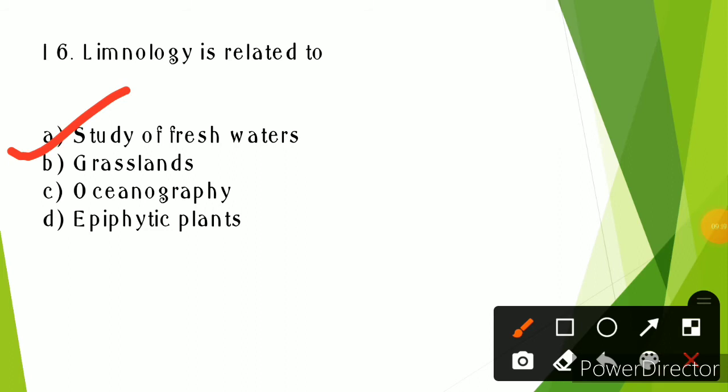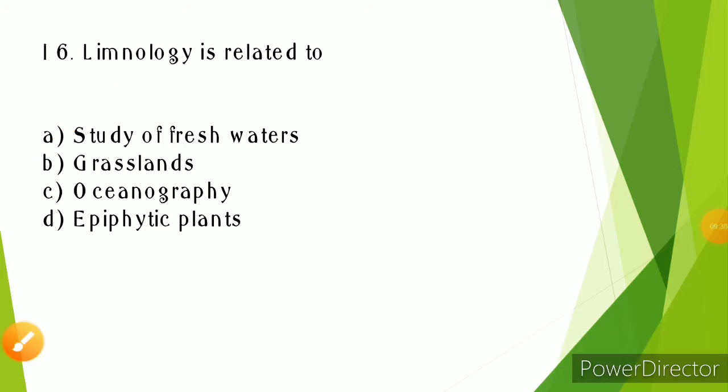Epiphytic plants - epiphytic means the plant grows on the surface of other plants and derives nutrients from them. For example, ferns, orchids, and mosses. These are epiphytic plants.